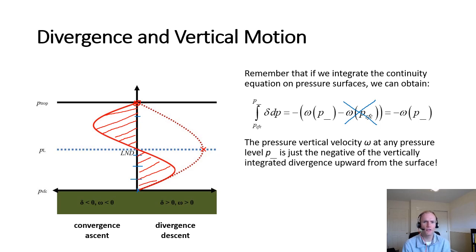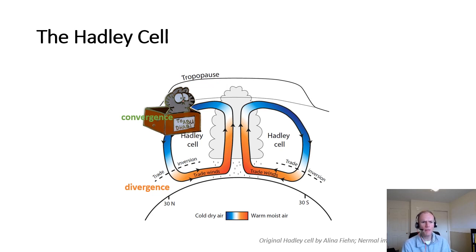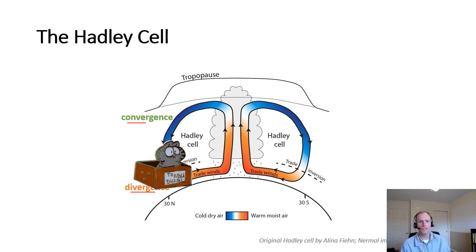Coming back to the Hadley cell, we have this low-level divergence and upper-level convergence, so Nirmal goes downward through the course of the troposphere. We already knew we'd have descent in the descending branch of the Hadley circulation where it's relatively cool in the subtropics. But why and how does descent actually lead to the formation of a subsidence inversion?